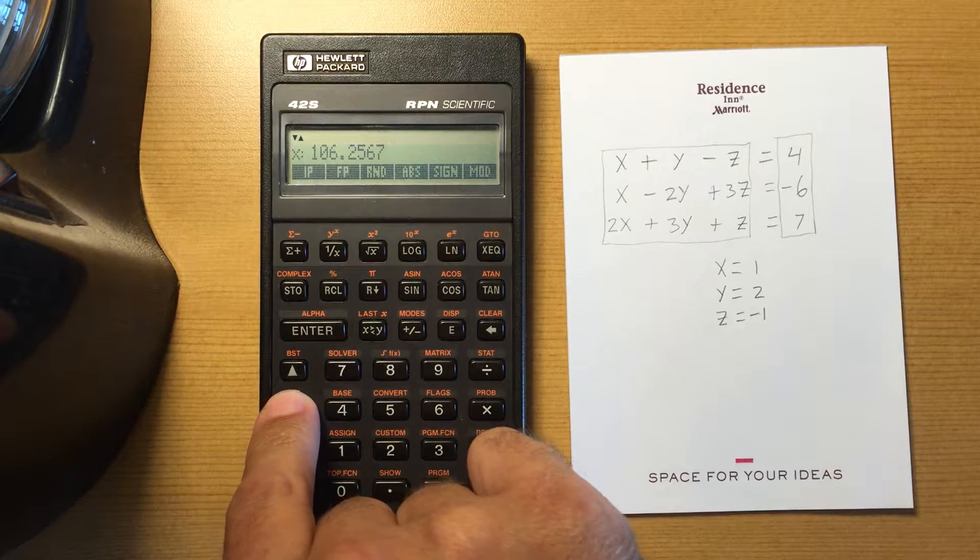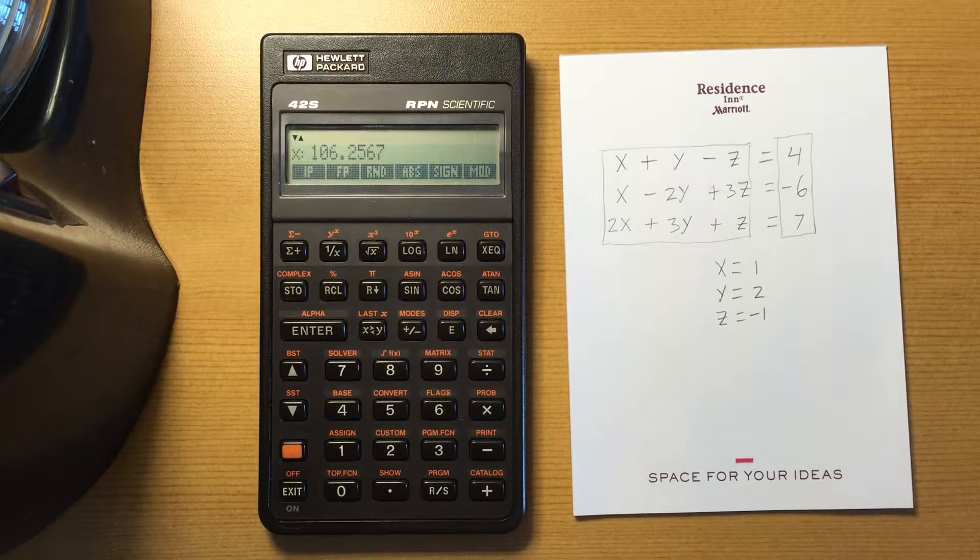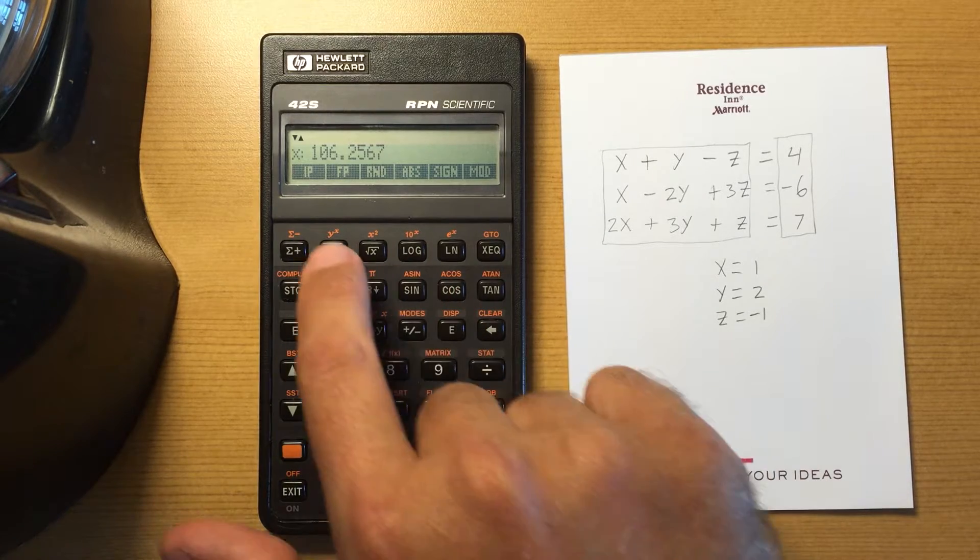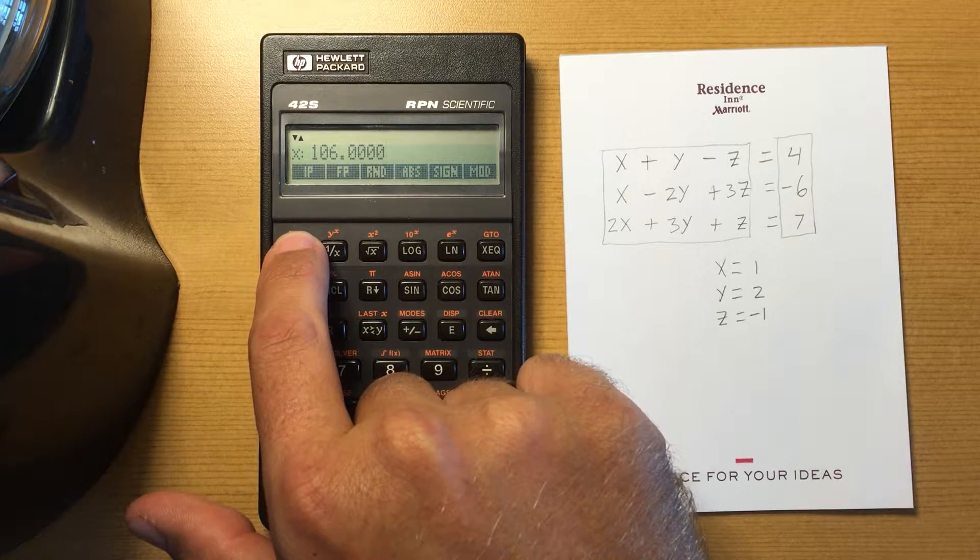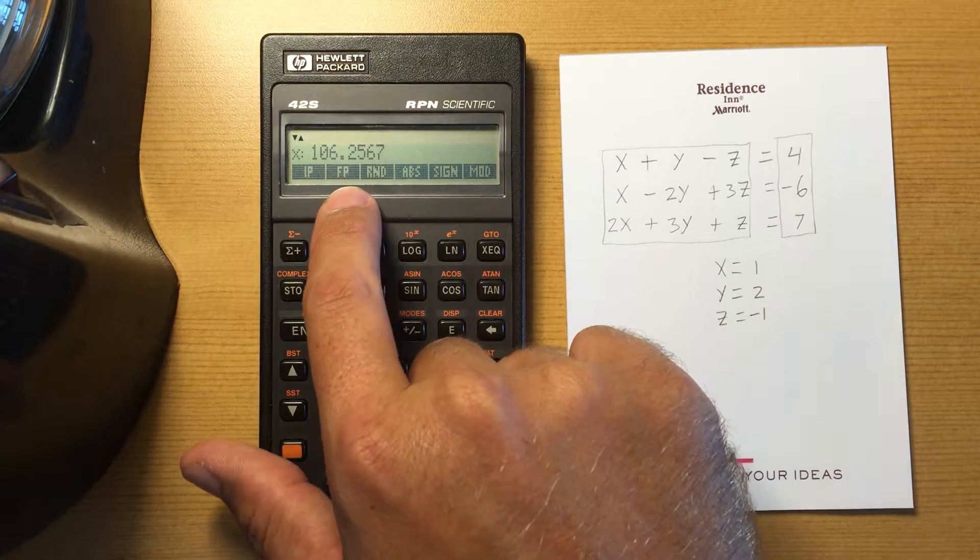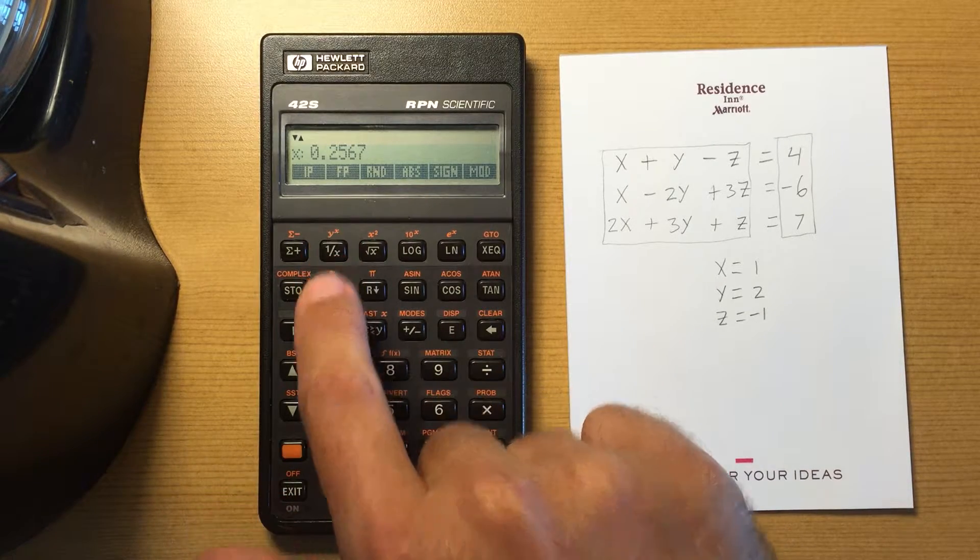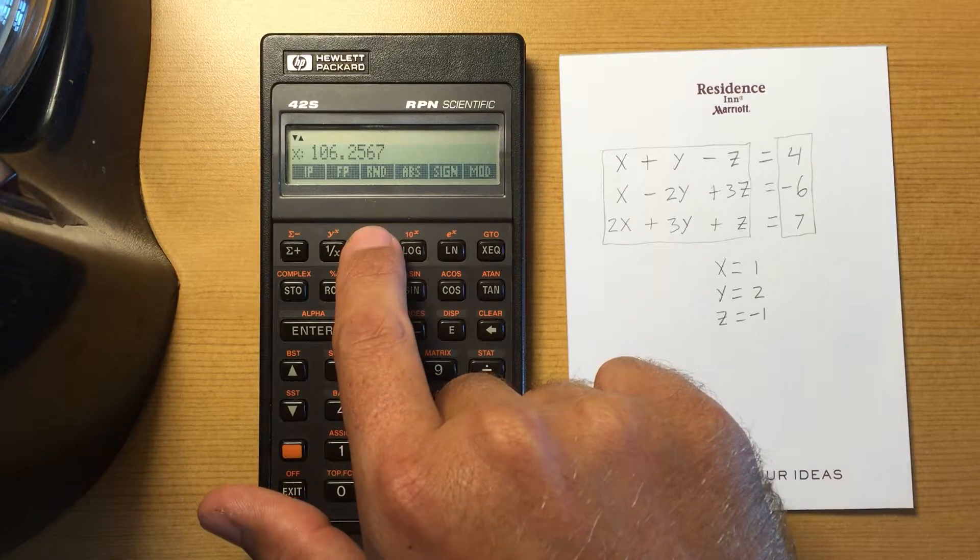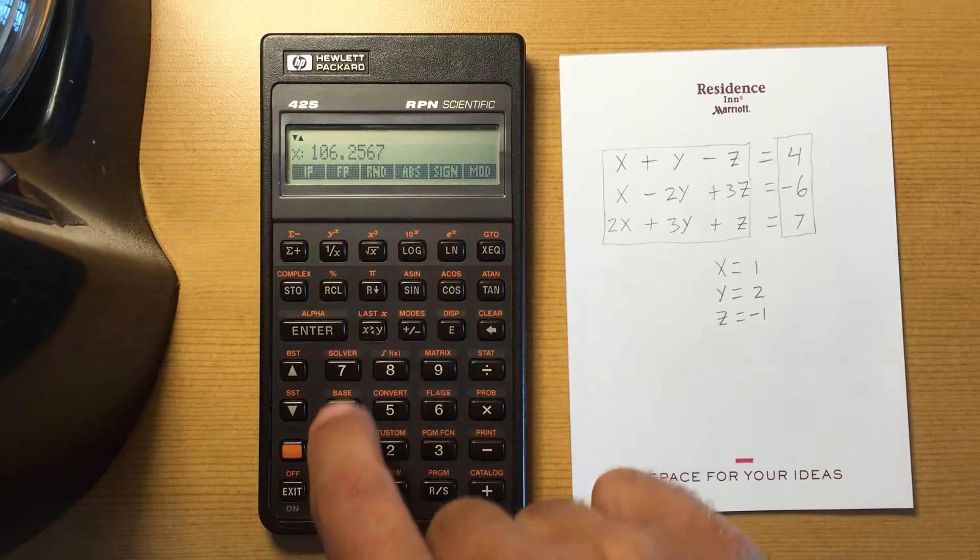Okay, there is another row to this menu. These I would say are primarily used in programming. If I hit that, that would give me the integer portion, so it'd give me 106. If I hit FP, that would give me the fractional portion.